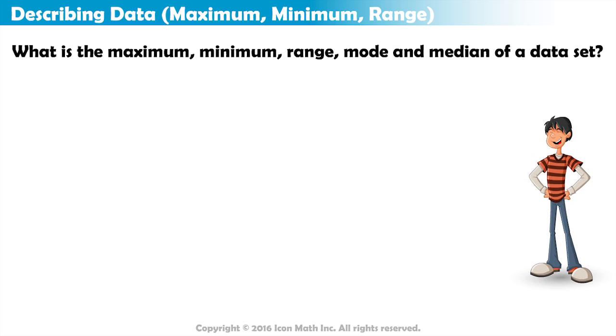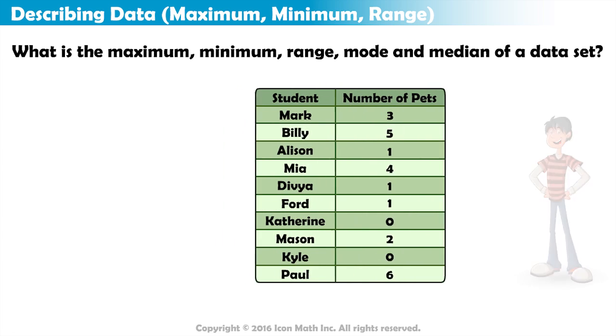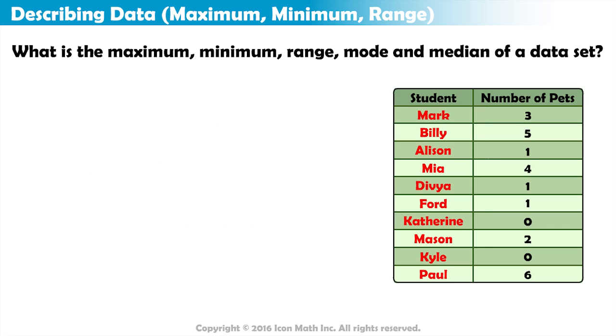Sam surveyed 10 students in his class to find out how many pets each student had in their home. The results of his survey are listed in this table. In statistics, each piece of information is referred to as an observation. Since Sam asked 10 students, the number of observations or sample size is 10.